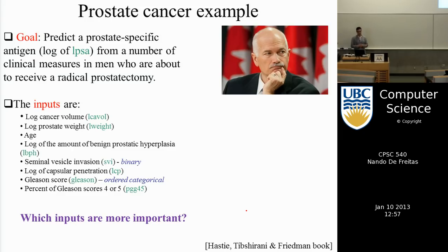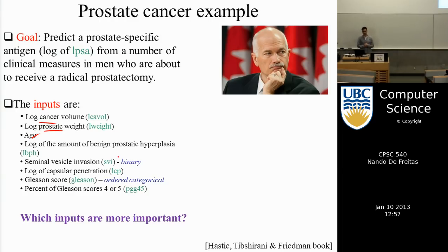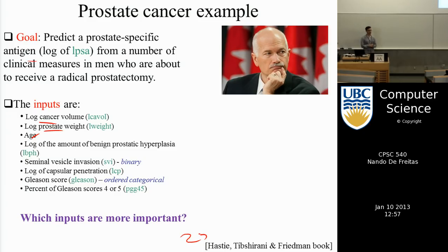Here's another example from medical research. In a prostate cancer study, the inputs are things like log cancer volume, prostate weight, and age of the patient. What we're trying to predict is an antigen level, to help design appropriate treatments. This study appears in the book by Hastie and Tibshirani, freely available on the course website. Machine learning has become extremely important in medicine; we work closely with the BC Cancer Agency.